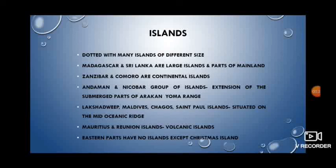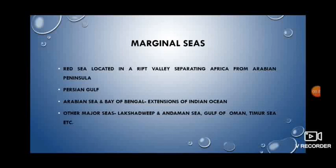Mauritius and Reunion Islands, east of Madagascar, are volcanic islands. The eastern part has virtually no islands except Christmas Island. The Indian Ocean has very few marginal seas. The Red Sea is one of the most interesting marginal seas, located in a rift valley that separates Africa from the Arabian Peninsula. The Persian Gulf is another important marginal sea.